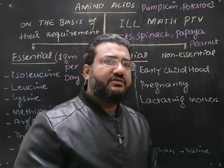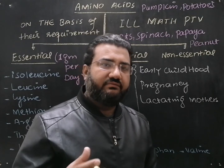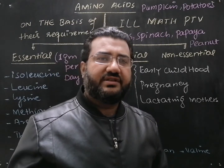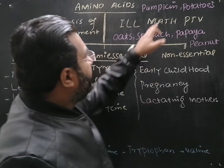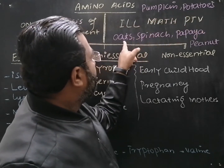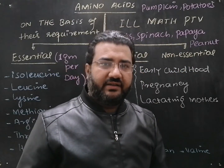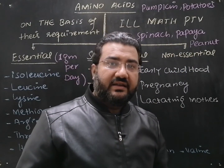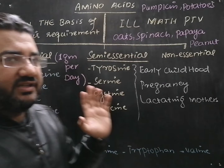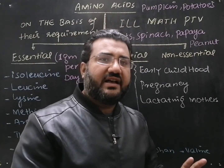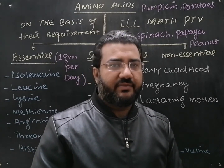What are the sources of these essential and semi-essential amino acids? We can name certain dietary sources from which these amino acids can be obtained. The major sources are pumpkin leaves, potatoes, oats, spinach, papaya, peanut, rice, wheat, and seaweeds. These are the main dietary sources from which essential and semi-essential amino acids can be obtained.